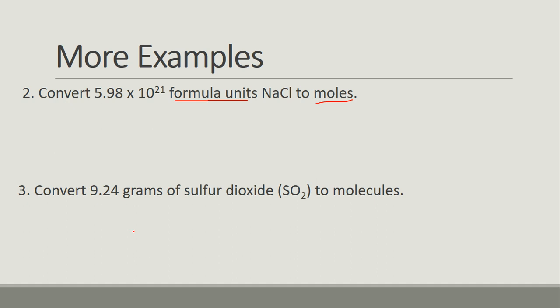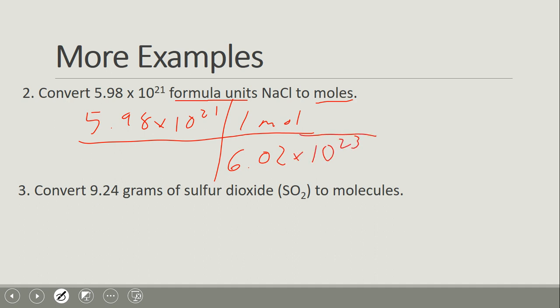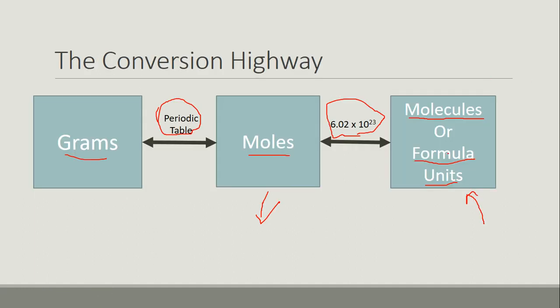So we're going to start with formula units. We're going to use that number, and we're going to stop at moles. For this question, we have 5.98 times 10 to the 21st formula units. You don't need to know the grams at all. You need to know that one mole has 6.02 times 10 to the 23rd formula units. So we're going to just divide the 5.98 by 6.02 times 10 to the 23rd, and that gives us an answer of 0.00993 moles. But we did not need the periodic table at all, because we just went from formula units right to moles.